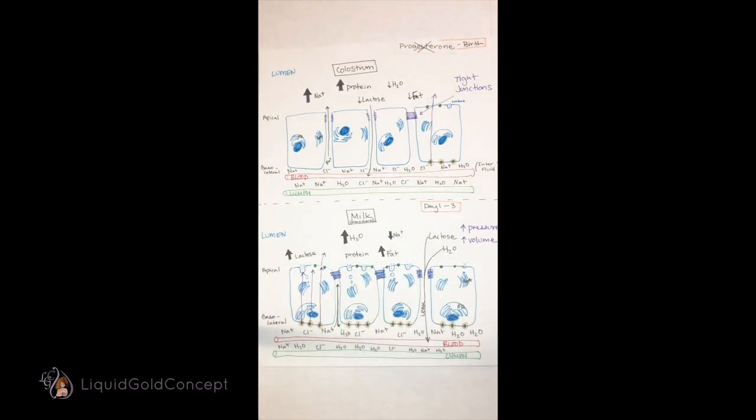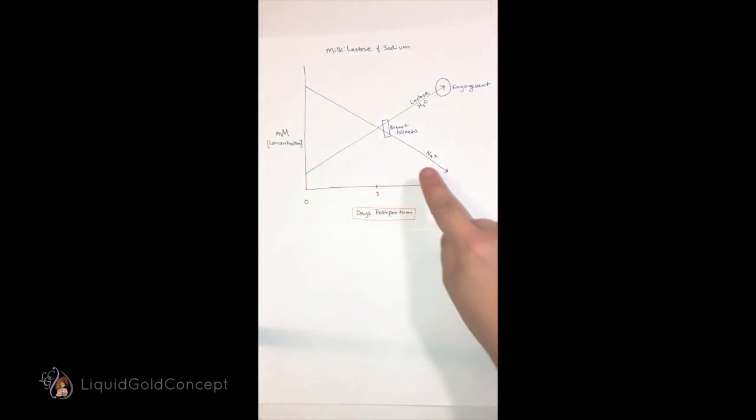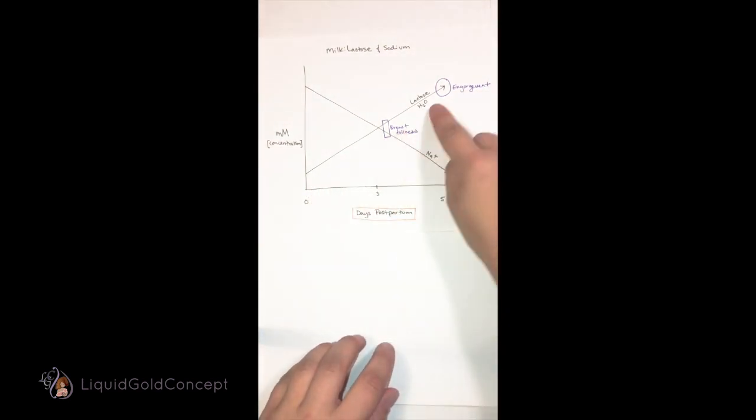We can easily measure the rapid decrease in salt content in breast milk in those first few days. The other marker for this transition is an increase in lactose and fat globules in the milk.